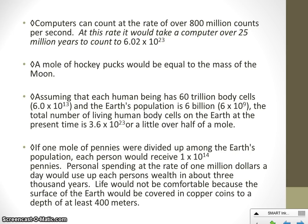A computer can count at a rate of 800 million counts per second, and it would still take 25 million years to count up to 6.02 times 10 to the 23rd. If we had a mole of hockey pucks, the mass would be equal to the moon. Each human being has about 60 trillion cells, and Earth's population is about 6 billion — meaning the total number of living human body cells on Earth is about half of a mole.